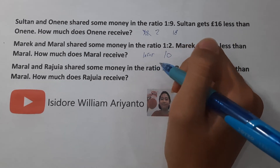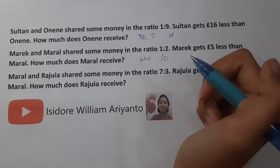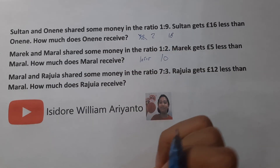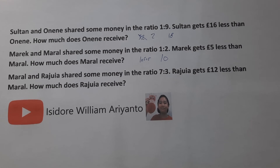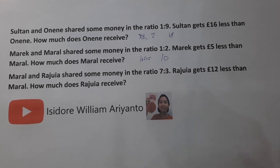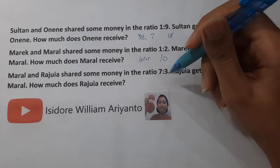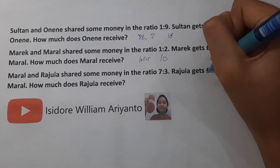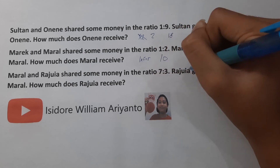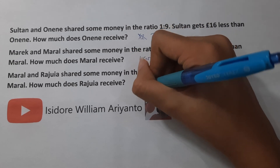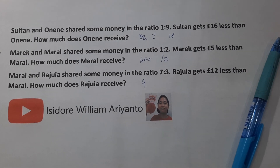Maral and Maral share some money in the ratio of 7 to 3. 12 pounds less — since it does not have seven, 12, so if you multiply it, 21 and 9. So it would be 9 pounds. So yeah, that's it — thank you for watching and goodbye.